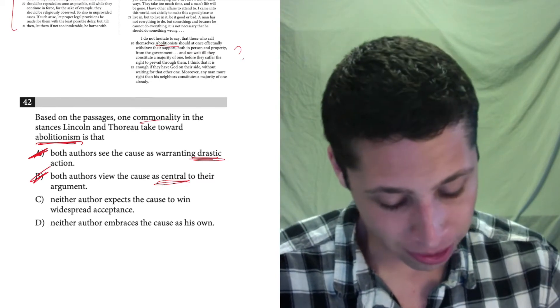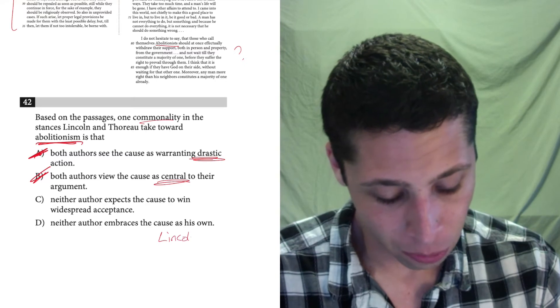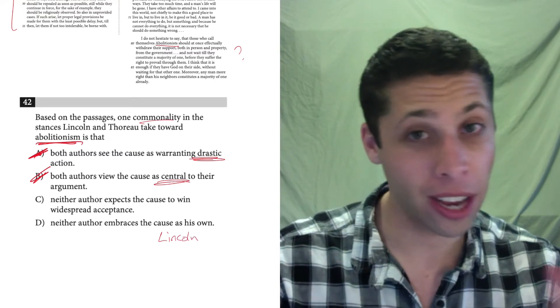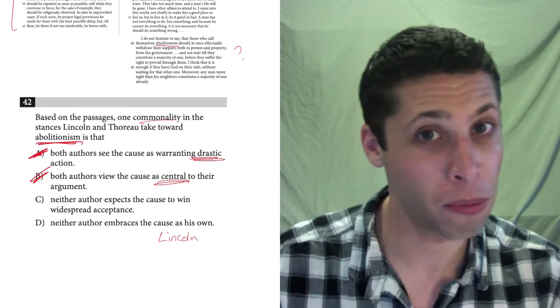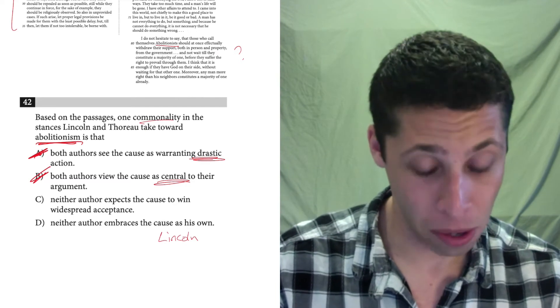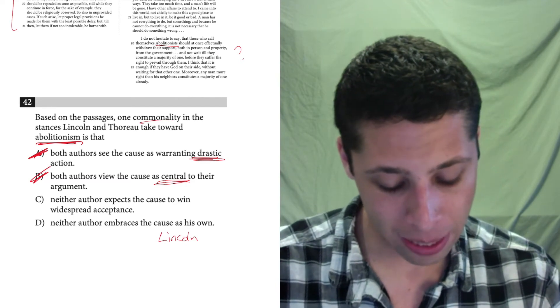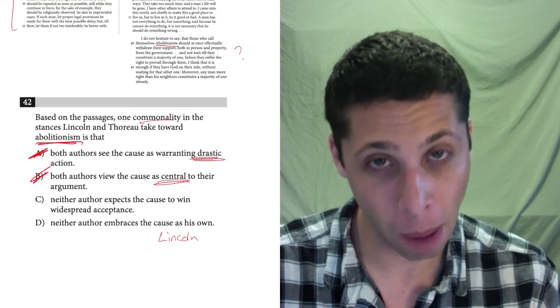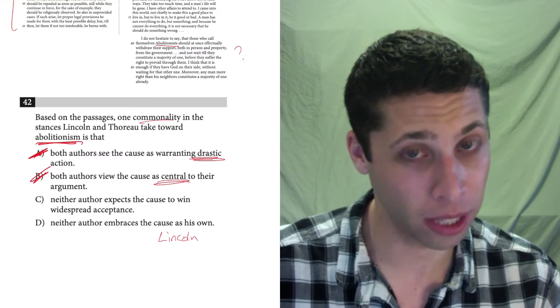Neither author embraces the cause as his own. Well, that kind of matches with Lincoln, where he's saying I'm not saying if it's right or wrong, I'm just saying abolitionism, you know, shouldn't go through mob rule. I don't remember that with Thoreau. But comparing that now to choice C, it looks a little better. That's probably the better guess, because I know it works for Lincoln.